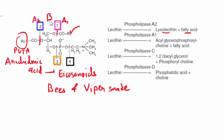Phospholipase B, also known as lysophospholipase, is an enzyme with a combination of both phospholipase A1 and A2 activities. It can cleave the acyl chain from both position one and position two of the phospholipid. The products are glycerophosphorylcholine and two fatty acids. In general, it acts on lysolecithin, which is formed by the action of phospholipase A2 on lecithin.